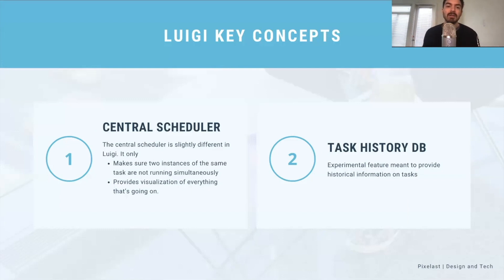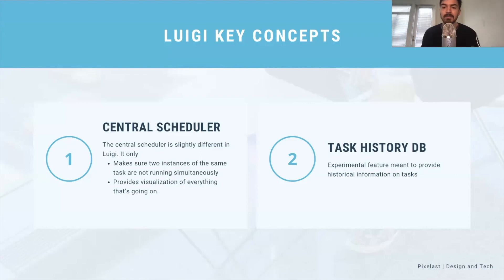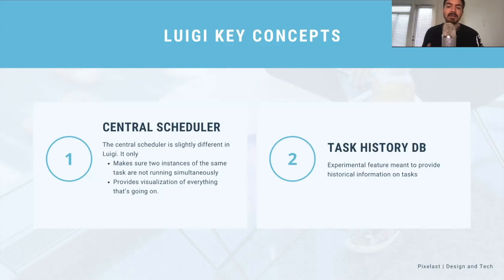From a high-level component standpoint, Luigi doesn't have as much going on as Airflow. You've got a central scheduler, which doesn't really do the same thing that Airflow's does — in this case the central scheduler really makes sure that none of the actual tasks are running at the same time, so you don't have task A and task A running twice. It also provides a visual representation of what's going on in terms of what task your pipeline is on. Generally speaking, if you want to manage Luigi, you're going to have to use something like cron in order to manage when things are kicked off. There's also not as much logging — Airflow has a good amount of logging where it's very easy to click in and see what's gone wrong and where in the pipeline things have gone wrong. Luigi has some sort of task history DB but it's a little more experimental and doesn't have as rich information as Airflow does.